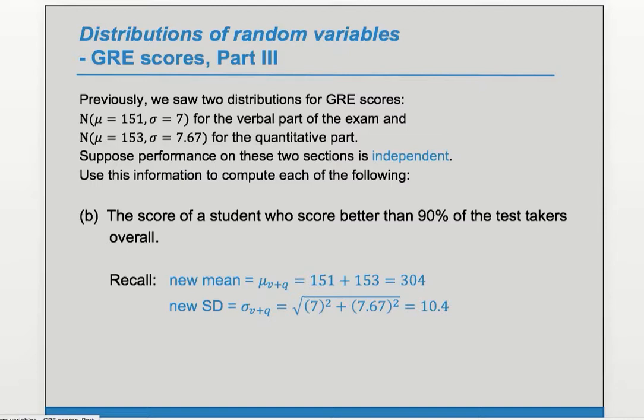We want the score of someone who scored better than 90% of the test takers. So we can imagine that this score is going to be in the upper half of the distribution. So it will have a positive z score. So what is the z score such that that score is higher than 90% of the scores?